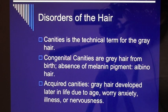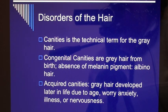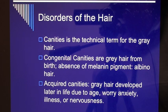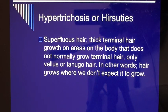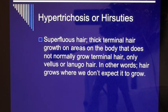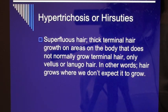Disorders of the hair: canities is the technical term for gray hair. Congenital canities is gray hair from birth due to an absence of melanin pigment, as in albino hair. Acquired canities is gray hair developed later in life due to age, worry, anxiety, illness, or nervousness. Ringed hair is alternating black and white bands on a single strand. Hypertrichosis, or hirsutism, is superfluous hair — thick terminal hair growth on areas of the body that do not normally grow terminal hair.